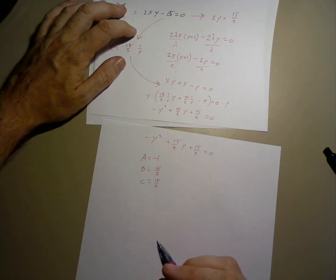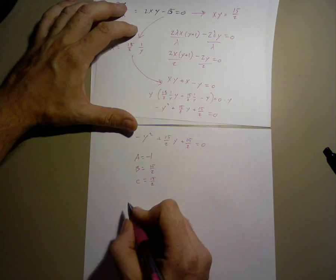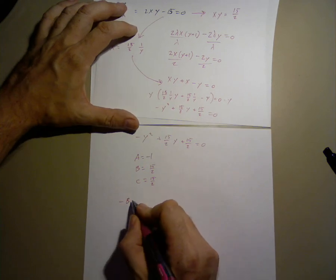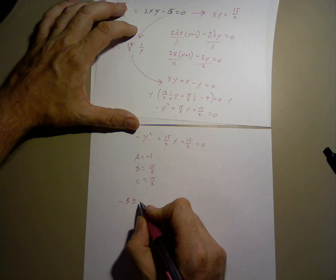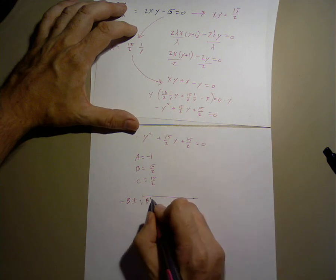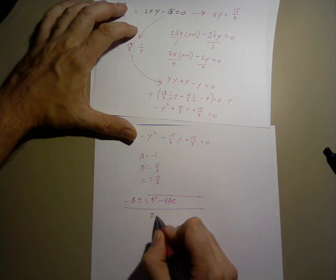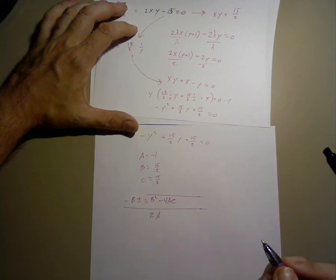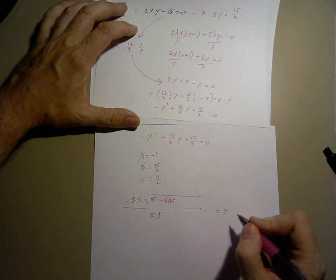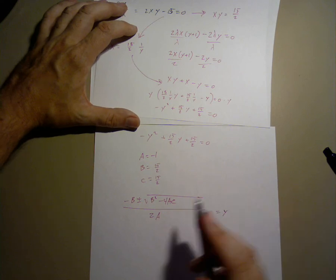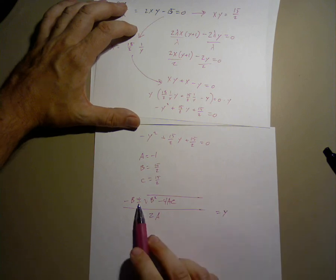In that case, we set out the quadratic equation, which is minus b plus minus square root b squared minus 4ac over 2a. That will be our solutions to y. Notice, because of the plus minus, we'll get two solutions in this case.